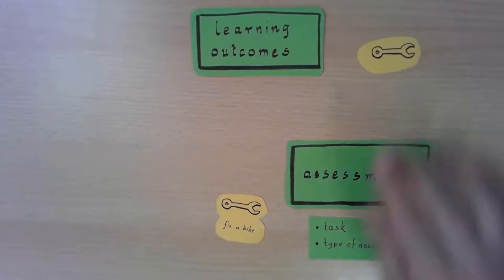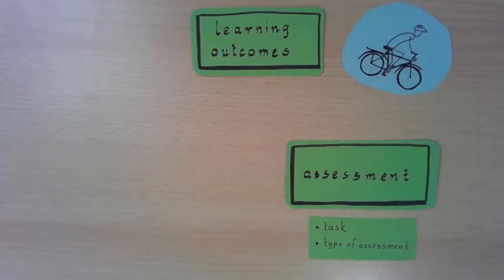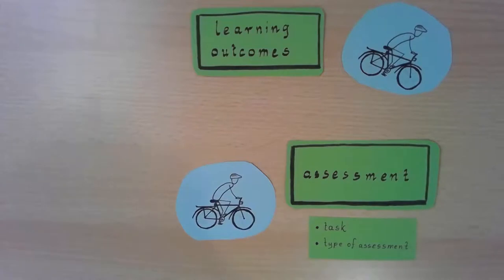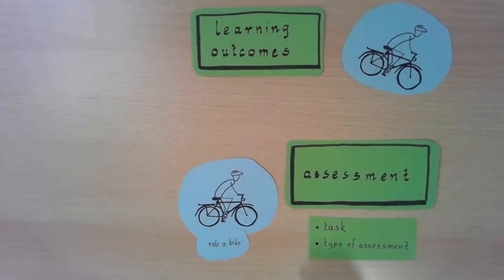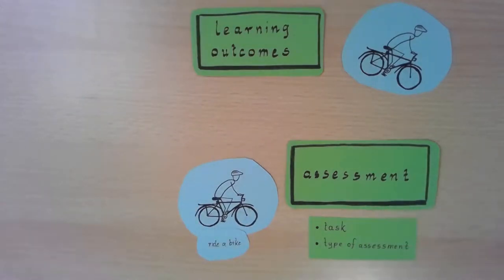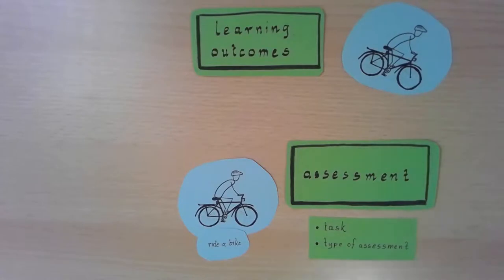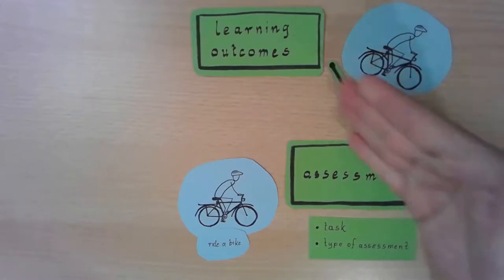And if your learning outcome is that students should be able to ride a bike, then of course the best way to assess this is to let them ride a bike. The task is: go through a parkour without falling down. You also have to find the right type of assessment — sometimes the task and the type of assessment really go hand in hand. When you connect learning outcomes and assessment this way, it is constructively aligned.